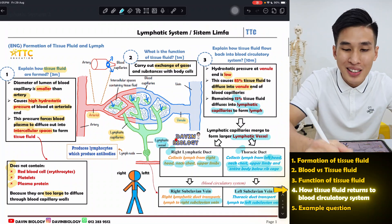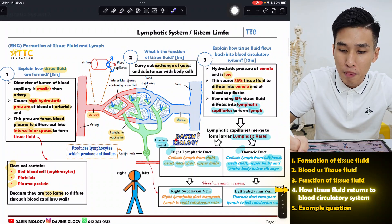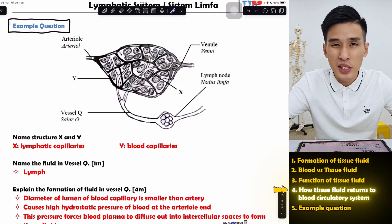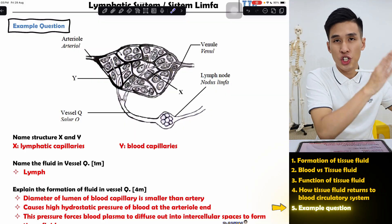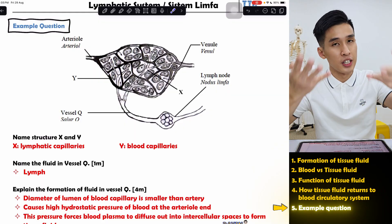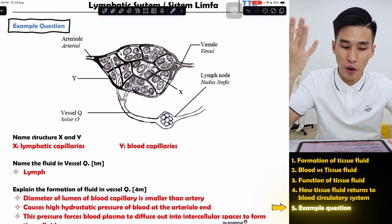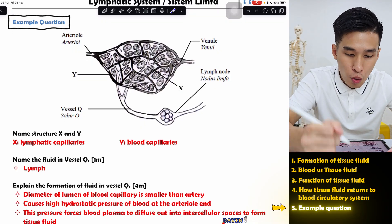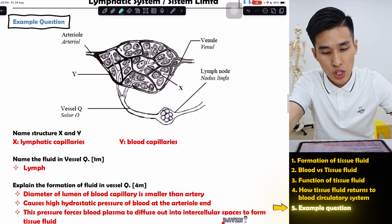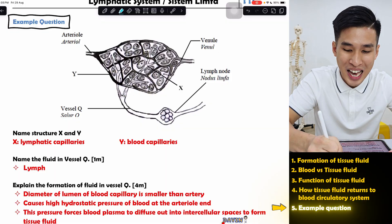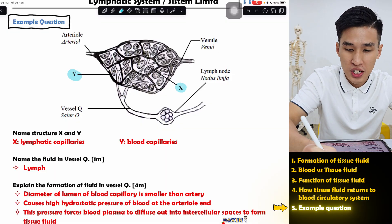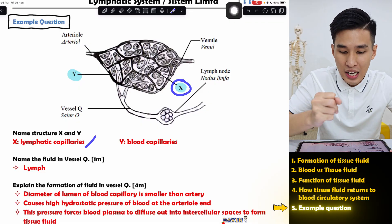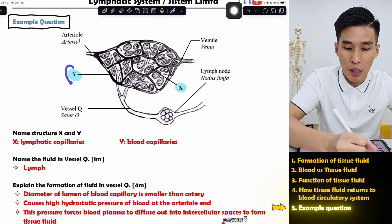That full explanation is worth around 10 marks in an exam. Now let's look at an example question. Labeling is very important — you need to identify which vessel is which. They ask why it's X and Y. You can see that X is in between the blood capillaries, so this is the lymphatic capillary, and this is the blood capillary.